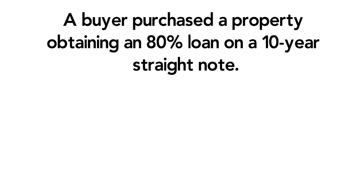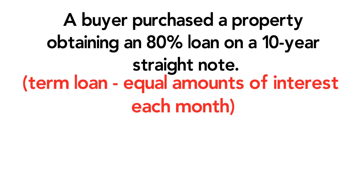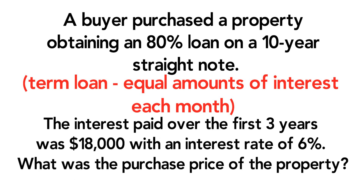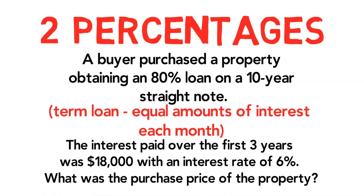Next, a buyer purchased a property obtaining an 80% loan on a 10-year straight note. A straight note is also called a term loan, which means we have equal amounts of interest each month. The interest paid over the first three years was $18,000 with an interest rate of 6%. Remember, interest rates are always quoted on an annual basis. What was the purchase price of the property? We have two percentages, so we will draw two Ts.